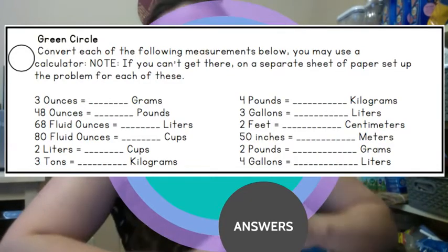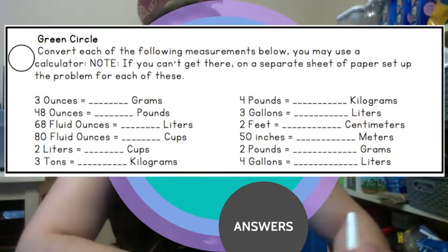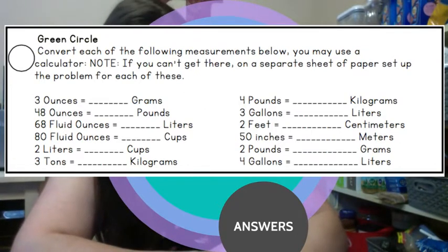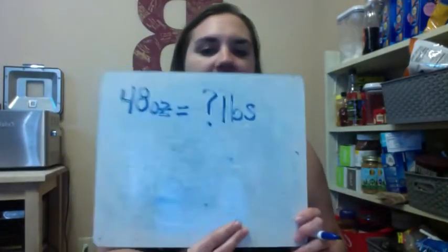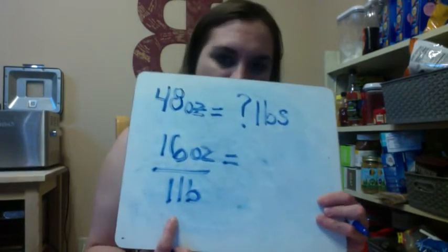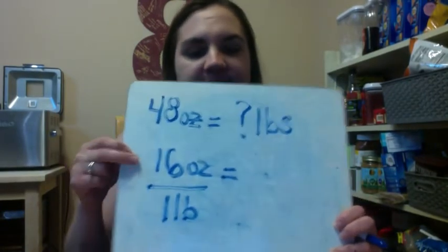Let's do one more together. 48 ounces equals question mark pounds. Okay? So again, just as I did with the previous two questions, I'm writing my problem at the top of my page. Now I'm going to set up my proportions. 16 ounces in a pound. So I have 16 ounces equals one pound. And we can shorten pound with the LB. That's why you see one LB at the bottom. So this is my proportion, right? 16 ounces in one pound.